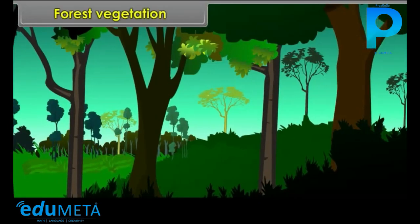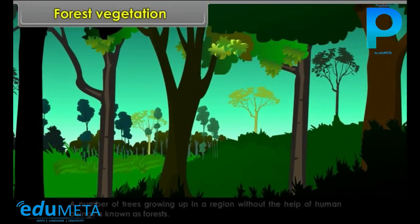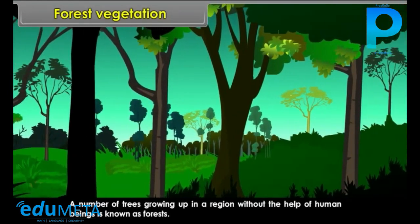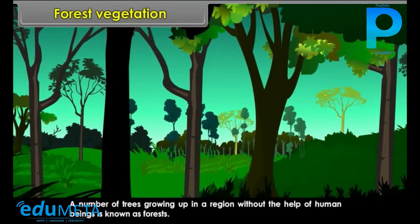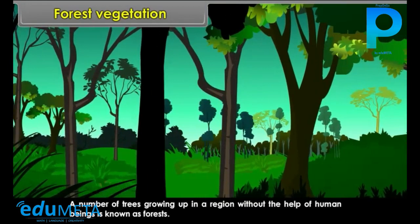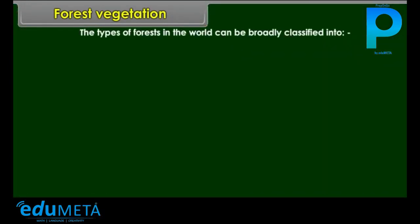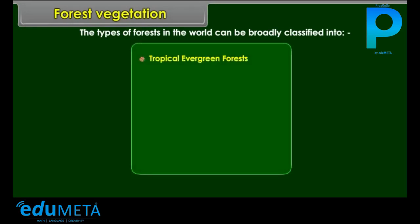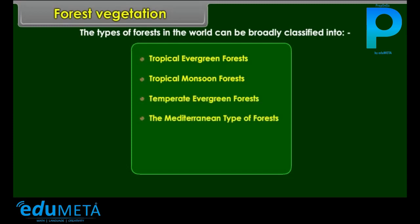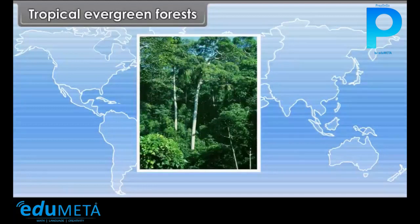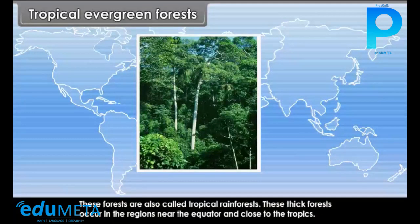Forest Vegetation: A number of trees growing up in a region without the help of human beings is known as a forest. The types of forests in the world can be broadly classified into tropical evergreen forests, tropical monsoon forests, temperate evergreen forests, Mediterranean type forests, temperate deciduous forests, and coniferous forests.